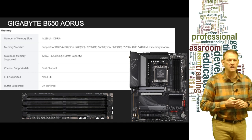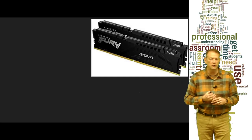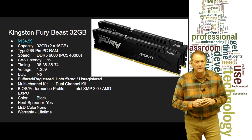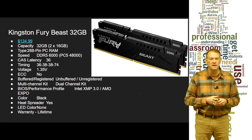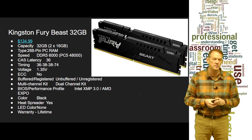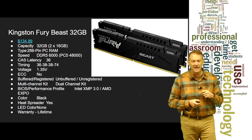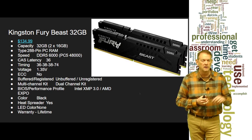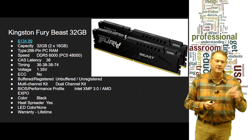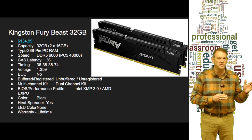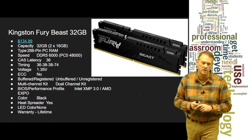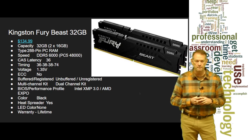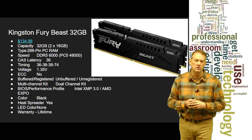So we brought you today the Kingston Fury Beast DDR5. This is 32 gig, just like you asked. We're bringing you two 16-gig sticks to take advantage of that dual-channel capacity and make it as fast as possible. This is DDR5-6000 with CAS latency of 36, which is the lowest CAS latency we offer on our DDR5 module. Timing is 36-38-38-74, non-ECC unbuffered RAM. These have heat spreaders on them, but these are not the RGB model, so they don't have any color. That's why it's only $134.99 for 32 gig of RAM, and lastly, we've got our lifetime warranty.